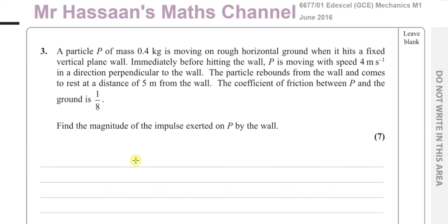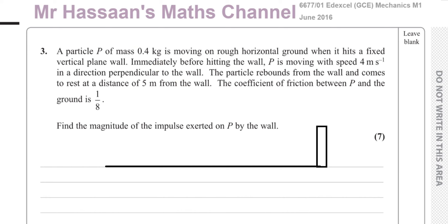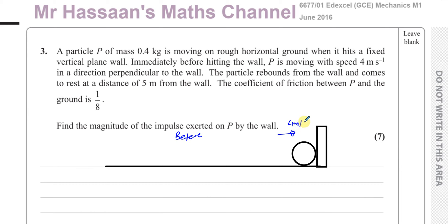Let's draw a diagram to illustrate the situation. We have the rough horizontal ground, a wall drawn as a rectangle, and the particle P hitting the wall. Just before it hits the wall, it's travelling at 4 m/s. Just after hitting the wall, we don't know the velocity — we'll call that vp. The mass of the particle is 0.4 kg.